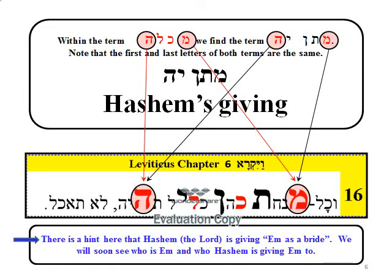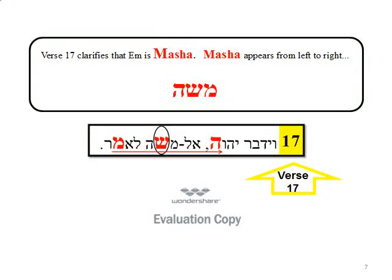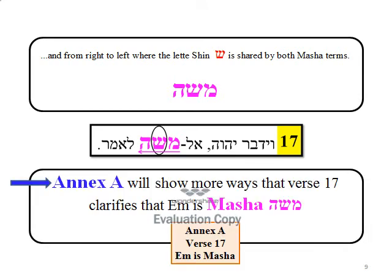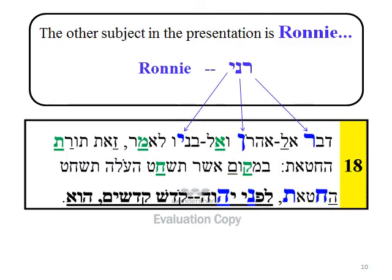We will soon see who EM is and who Hashem is giving EM to. Verse 17 clarifies that EM is Masha. Masha appears from left to right and from right to left, where the letter Shin is shared by both Masha terms. Annex A will show more ways that verse 17 clarifies that EM is Masha.